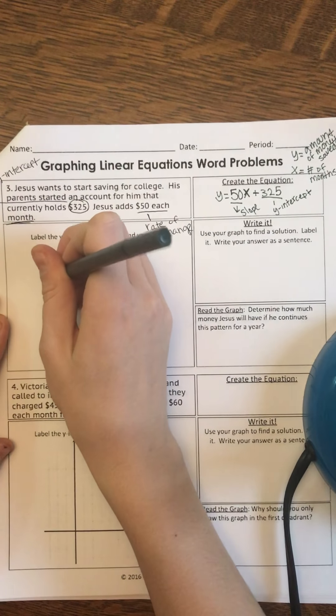And then since our Y-intercept is $325 and the graph is not quite that big, I'm going to make my little numbers on my Y-axis a little bigger than 1. They're going to go by 50. So 50, 100, 150, 200, 250, 300, 350, 400, 450.